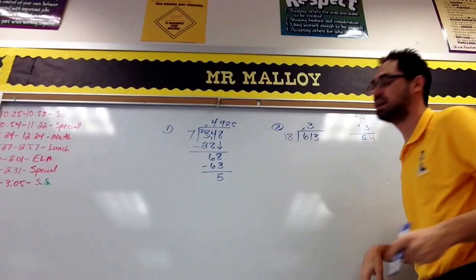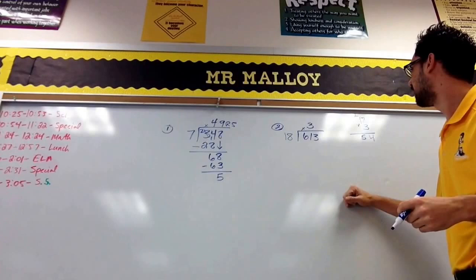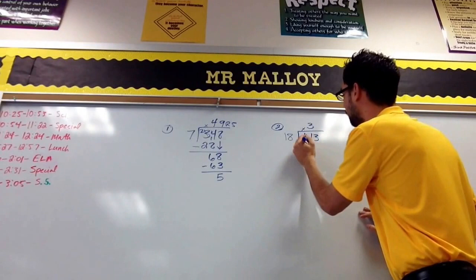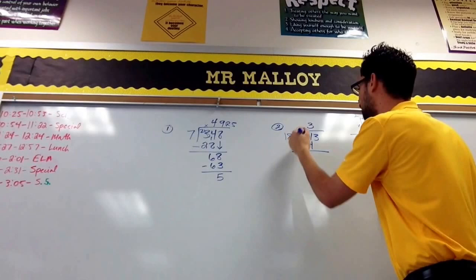So I use estimation to give me a number to try. If this was too high, I drop a number down; if it was too low, I go a number up. But this goes in 3 times. 8 times 3, and nice thing is I already have the math here, so that's 54. Subtract just like I did over there with a one-digit.